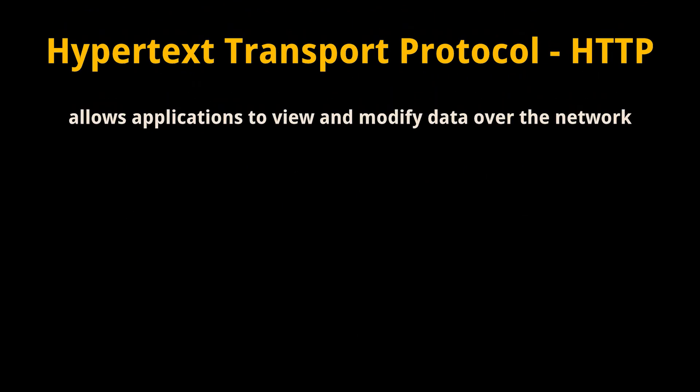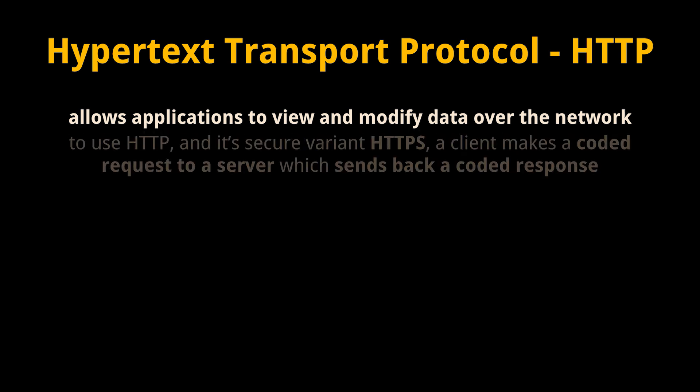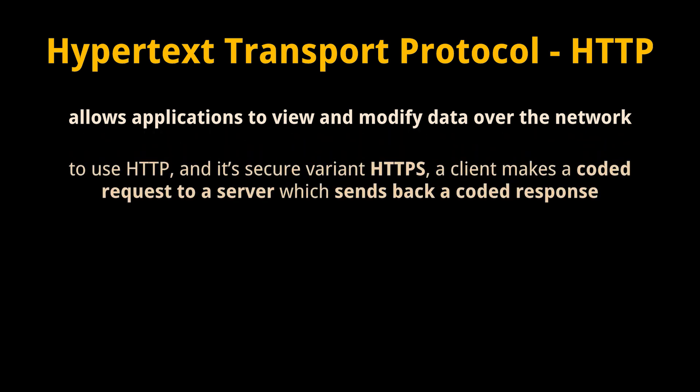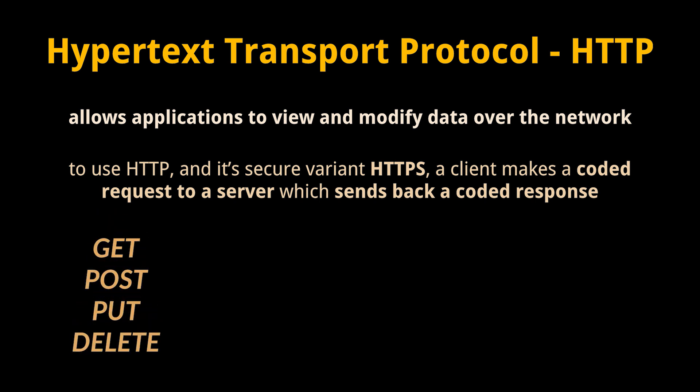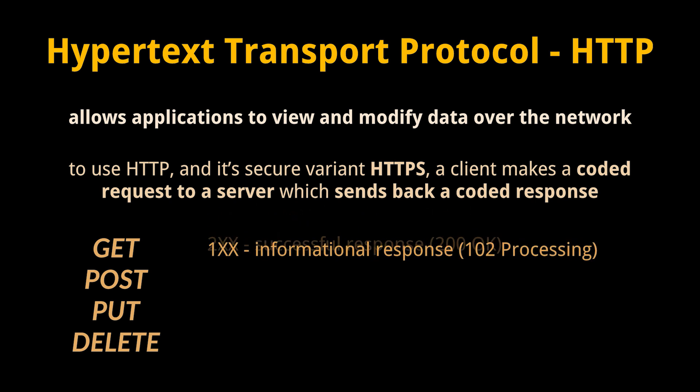The third network protocol is the Hypertext Transfer Protocol, or HTTP, which allows applications to view and modify data over the network. HTTP corresponds to the application layer of the TCP/IP model and layer 7 of the OSI model. To use HTTP and its secure variant HTTPS, a client makes a coded request to a server which sends back a coded response. HTTP requests and responses are divided into the header, which contains metadata about the request, and the body, which contains data in some specified format such as JSON. HTTP methods specify what kind of request is being made. The key methods are GET — a request to read data — POST — a request to create data passed in the body — PUT — a request to create or update data with the one in the body.